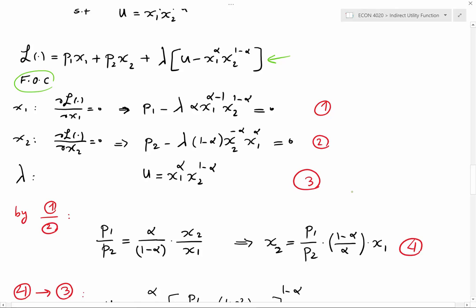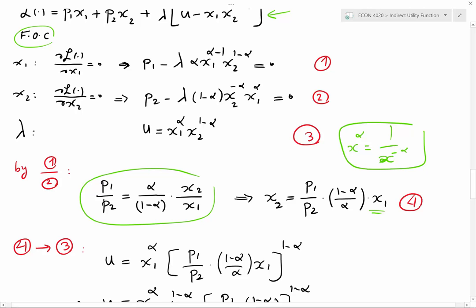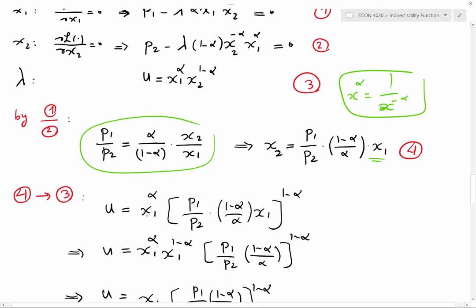To do so, I use a simple math rule which says that x to the power of alpha is equal to 1 over x to the power of minus alpha. Given this math rule I can simplify this equation and get equation number four, which expresses the value of good two as a function of good one.